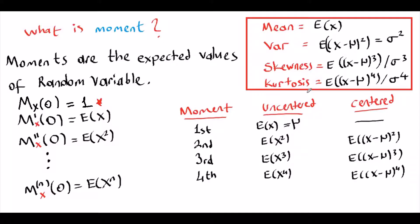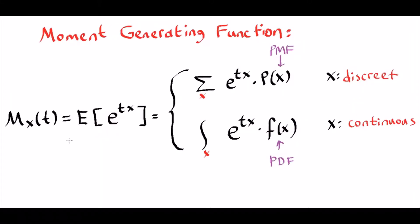Now let's see how we use the moment generating function. The moment generating function by definition equals the expectation of e to the tx. Taking the definition of expectation: the moment generating function for the discrete case is equal to the summation of e to the tx times the mass function, and for the continuous case it is the integration of e to the tx times f of x over the region.